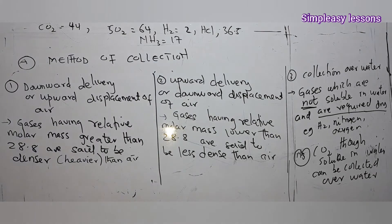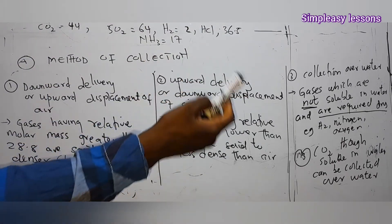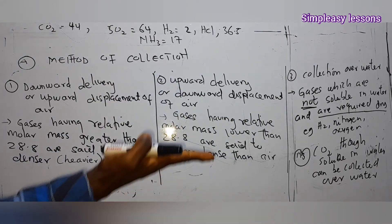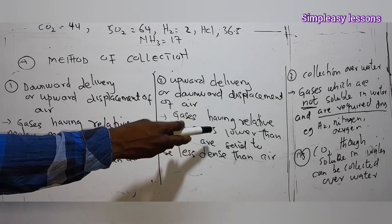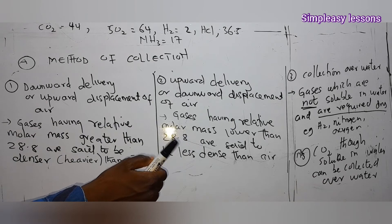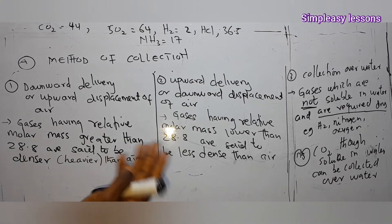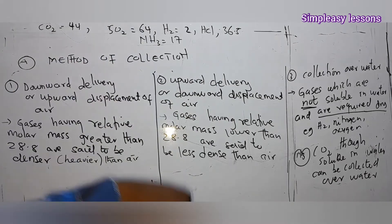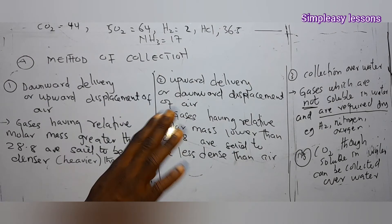For upward delivery, there will be downward displacement of air. If the gas is not heavy, it floats upward — upward delivery — and air moves downward. So if a gas has a molar mass less than 28.8, it is lighter than air, it rises, and we say upward delivery with downward displacement of air.